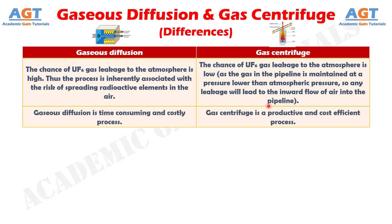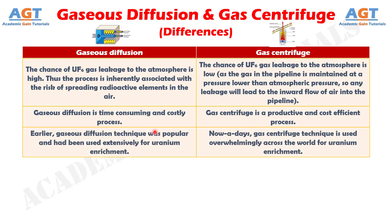Difference number 6. Gaseous diffusion is a time-consuming and costly process, whereas gas centrifuge is a productive and cost-efficient process. Difference number 7. Earlier, gaseous diffusion technique was popular and had been used extensively for uranium enrichment, whereas nowadays, gas centrifuge technique is used overwhelmingly across the world for uranium enrichment.